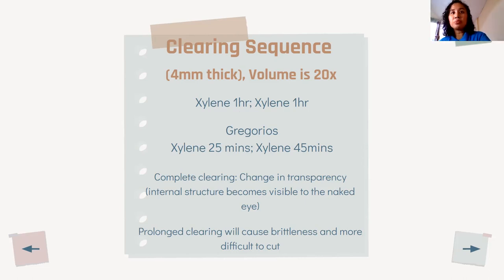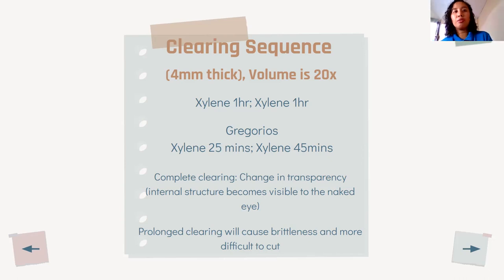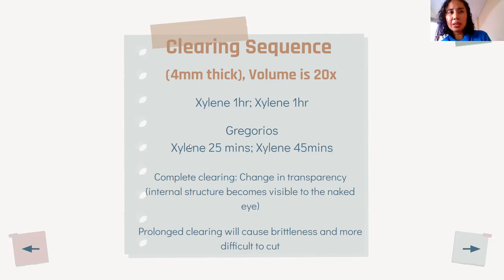Based on the book by Gregorius, the recommended times are: 25 minutes in the first change of xylene, and 45 minutes in the second change. This is likely the minimum requirement. If it is urgent, these would be the shortest times to follow.